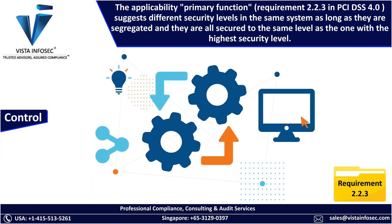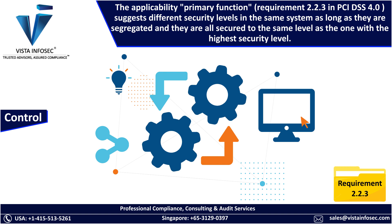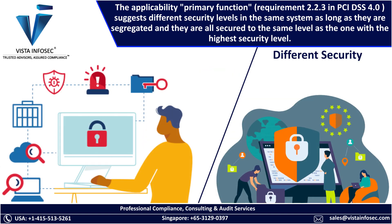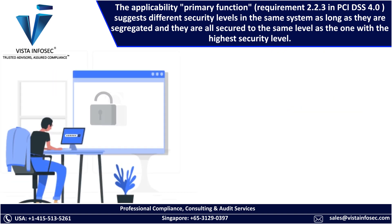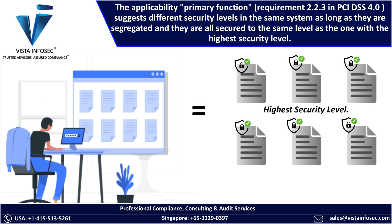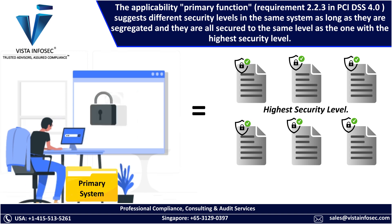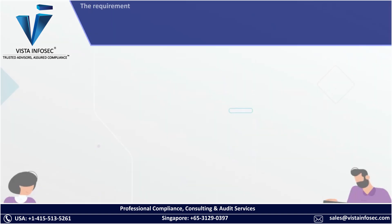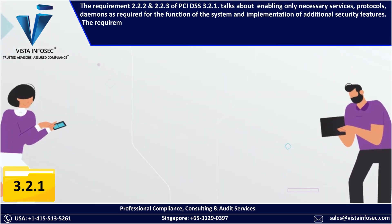Requirement 2.2.3 addresses primary functions and security levels. Previously, one system could have only one primary function. In PCI DSS 4.0, a system can host multiple functions, as long as all functions are secured to the same level as the one with the highest security requirement.